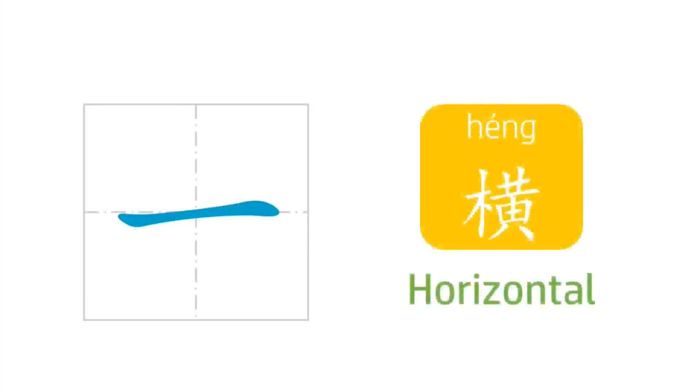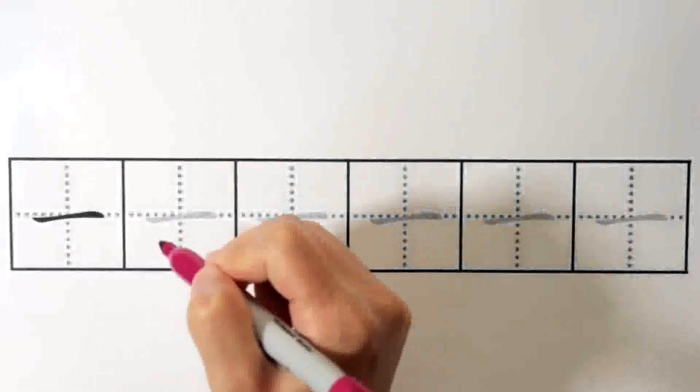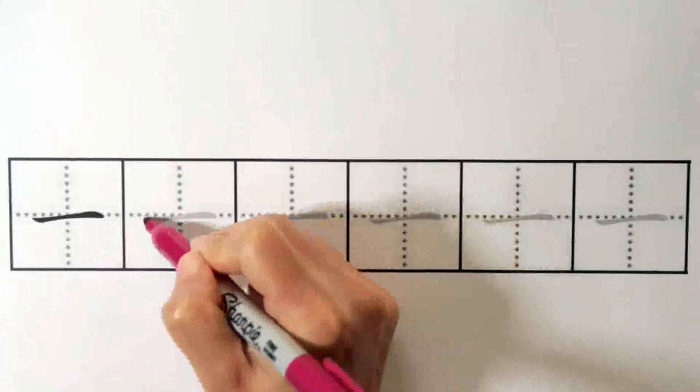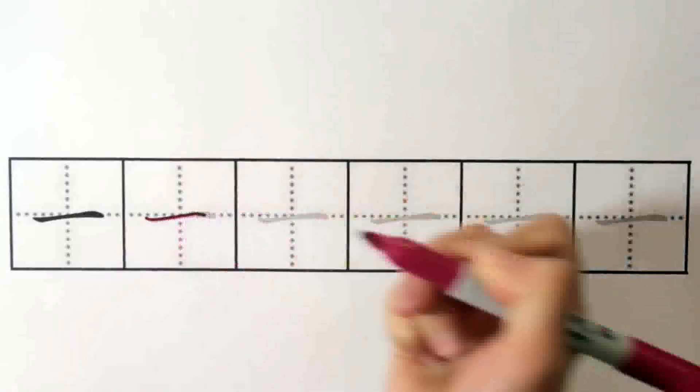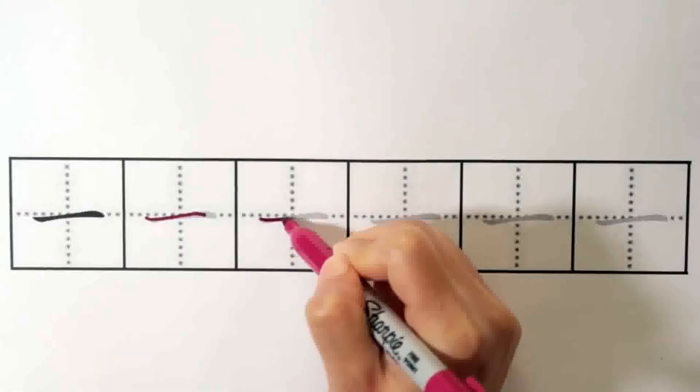This is heng, or horizontal. It's written from left to right, like this. Easy, right?